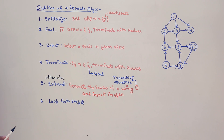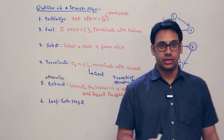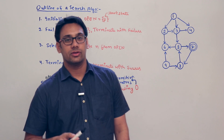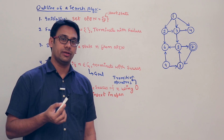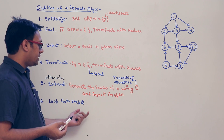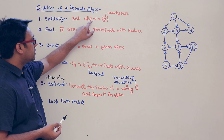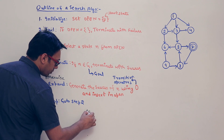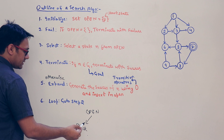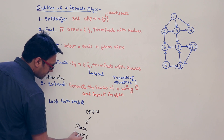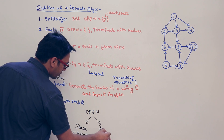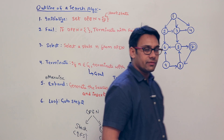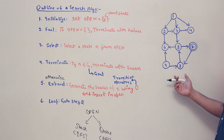This algorithm seems very general, and you will not be able to understand how it is working unless you know what this variable 'open' is. This variable 'open' is very interesting: if you use a stack as the data structure for 'open', then this entire algorithm will behave like a depth first search algorithm. But if you use a queue as the data structure for 'open', then this entire algorithm will become a breadth first search algorithm. That is why 'open' is very interesting.